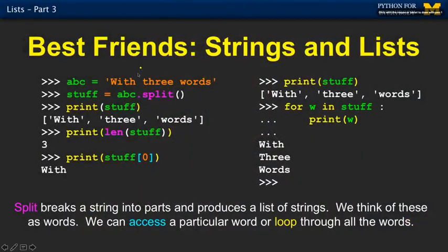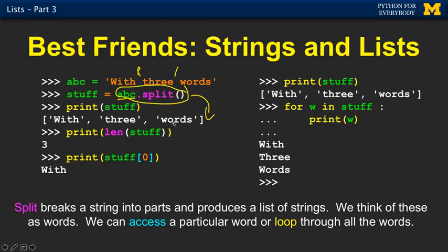We're going to come up with a way to split a string. The simple thing we're going to do is find the spaces and split it into pieces. There is a built-in function in Python called split — it's a member of ABC, so abc.split — and this returns a list. It basically takes a string and gives us back a list. The spaces are gone, the words are chopped up.